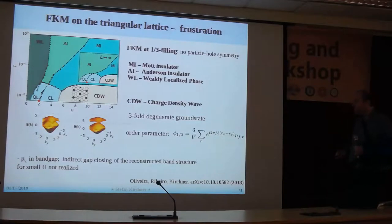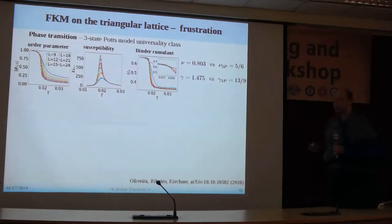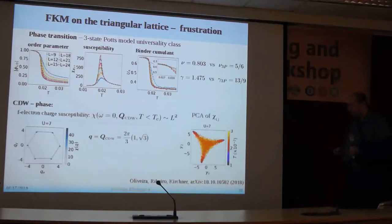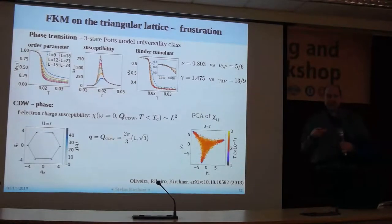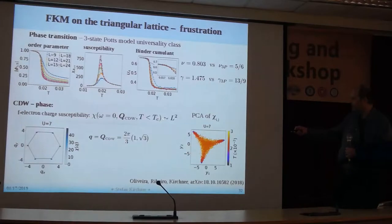If we calculate the band structure in the charge density wave, the chemical potential for the conduction electrons lies within the gap. Reducing U changes the band structure such that we have indirect band closing — indirect because it connects the center to the second band. But this is not realized under the assumption of this particular CDW order; something happens before the charge density wave vanishes, and we find a liquid region between CL and QL. For the phase transition, we find universality in the three-state Potts model universality class, since we have a degeneracy of three. Analyzing the charge density wave phase by studying the susceptibility at the ordering wave vector, you see that the susceptibility scales with volume — this is really long-range order.